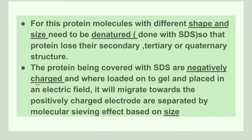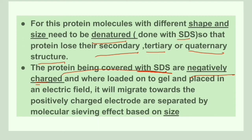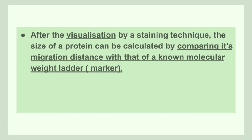The proteins are of different shapes as well as sizes. These are then denatured with SDS, so that the proteins lose their secondary, tertiary, as well as quaternary structure. The proteins, when covered with SDS, are uniformly negatively charged. When the proteins are loaded to the gel and an electric field is applied, they migrate towards the positively charged electrode. A separation occurs which is by size. After the migration is completed, the proteins are separated according to their sizes and later visualized using a staining technique.